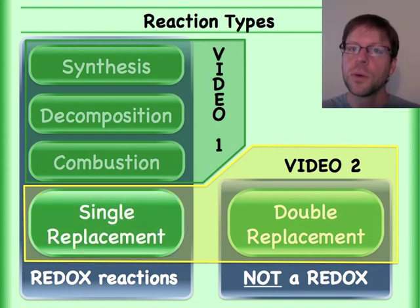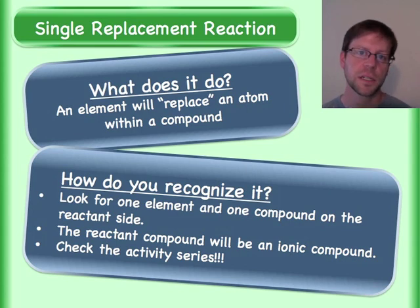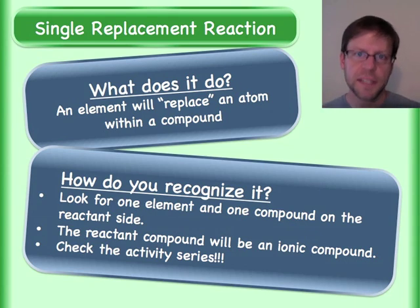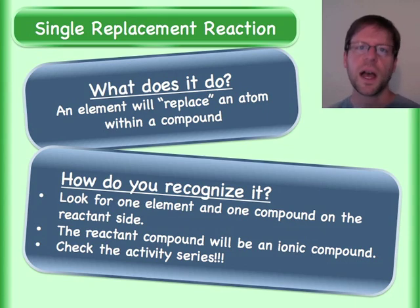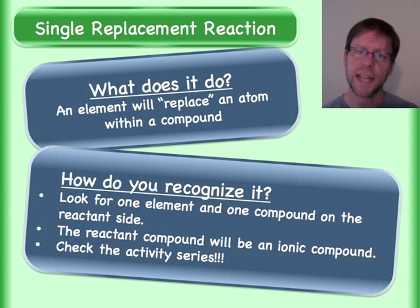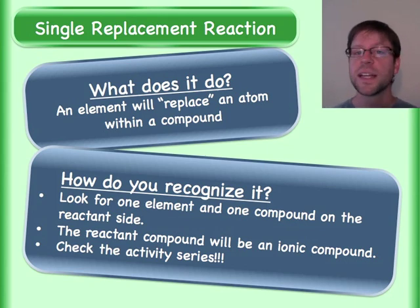So let's go ahead and start with the single replacement reaction. One element — in its natural state — is going to replace some other element that's within a compound. To identify a single replacement reaction, you should look on the reactant side and you should see an element and then specifically an ionic compound.